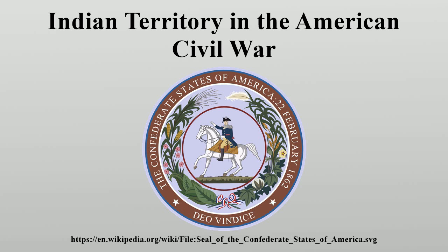The Union victory at the Battle of Pea Ridge in Northwest Arkansas during March 1862 limited the Confederate government's ability to protect its Indian allies. Stand Watie and other officers had to fight on without support. The Union army recaptured its forts in the territory, but abandoned them when faced with ongoing raids by Stand Watie. Later the Union recaptured them. Stand Watie was the last Confederate commander in the field to surrender.